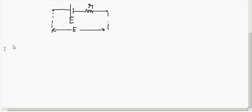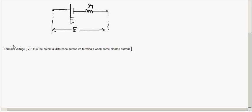When we connect an external circuit, the terminal voltage comes into definition. The terminal voltage V of a cell is the potential difference across its terminals when some electric current is flowing through the cell — that is, when it is in a closed circuit.